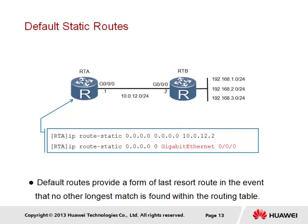In the example, router RTA is connected directly to RTB but is not aware of networks 192.168.1.0, 192.168.2.0, and 192.168.3.0 because RTB has not been configured to share these networks to RTA via its GigabitEthernet interface. A default static route can therefore be configured on RTA to point to either the next hop address of RTB or to define the outbound GigabitEthernet interface of RTA, since the link represents a point-to-point connection. The route is defined using the special address 0.0.0.0, representing any network, and acts as a route of last resort — packets with no other matching route are forwarded to RTB using this default static route.